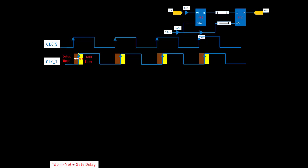Now these are the setup and hold times. As in the previous part we assumed setup and hold time are zero, but in this part we are considering them. Setup time means every flip-flop requires data to be stable at the D1 pin before the positive clock edge for a certain time — that certain time is the setup time. Similarly, it requires data to be stable after the clock edge — that time is the hold time.